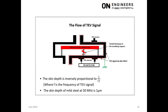The TEV signal does not propagate through the entire thickness of the metal, but instead flows at the inner skin surface of the metal. The TEV signal follows the curvature of the metal and eventually flows to the outside surface where the TEV sensor is placed. The skin depth is inversely proportional to the frequency; a 50 MHz TEV signal in steel has a skin depth of 1 micron.